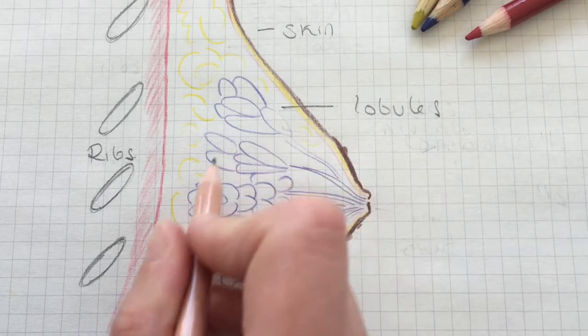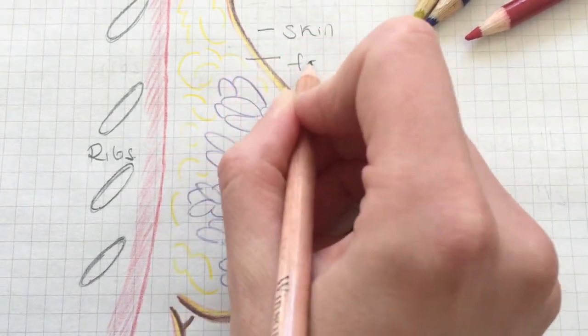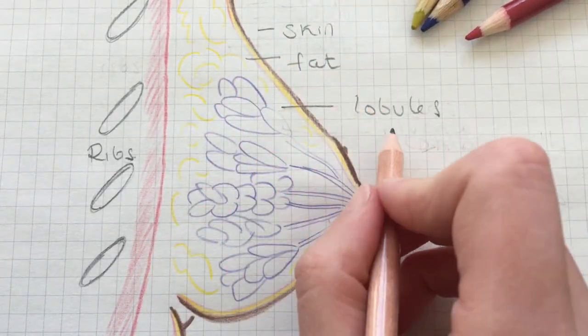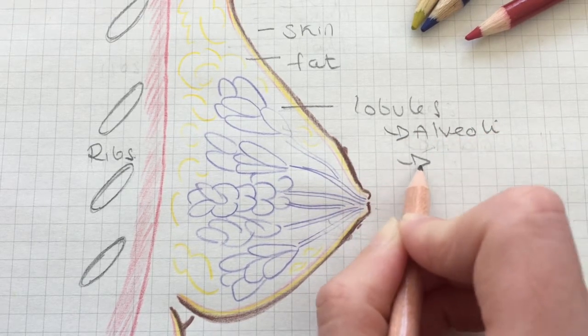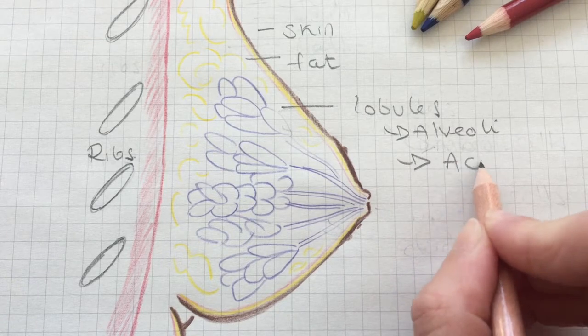You can see the lobules here in purple and the fat is here in yellow. So the lobules are made up of the alveoli, and inside the alveoli we have milk producing acini cells.